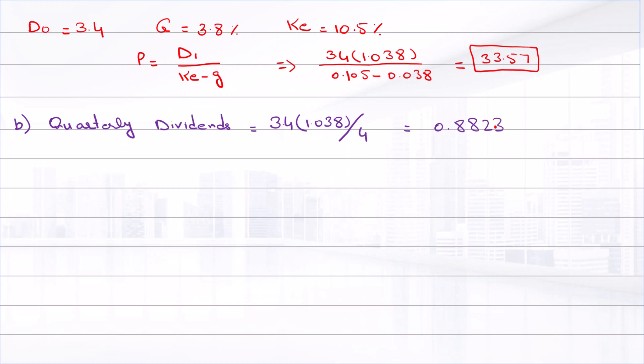To find the equivalent annual dividend, we must assume that the quarterly dividends are reinvested at the required rate of return. The effective quarterly rate = (1.105)^0.25 - 1 = 0.02527. The effective annual dividend will be the future value of quarterly dividend payments at the effective quarterly required return.